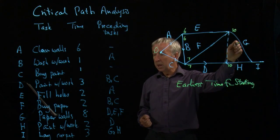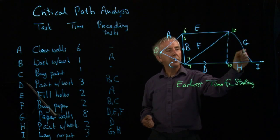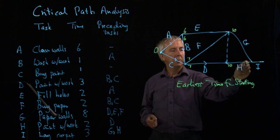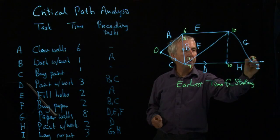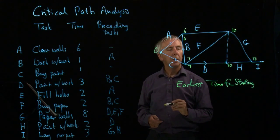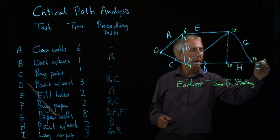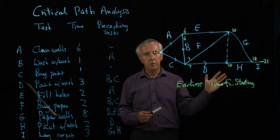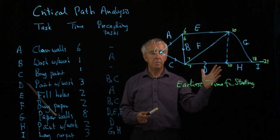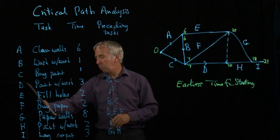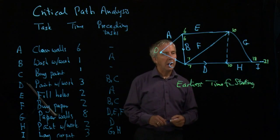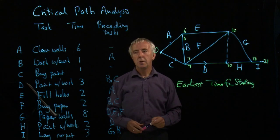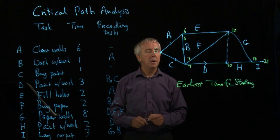What about I? Well, G takes eight, and it doesn't start until ten hours, so that could start at 18 for G to be ready. And H only takes two, so that'll be ready after 12. So again, I go for the largest, 18, then I itself takes three, so I can finish after 21 hours. That's called a forward pass. We're going from the beginning to the end. What we now do to find the critical path, having found that we can do this project in 21 hours, not the 28 that we originally thought, what we now do is work backwards.